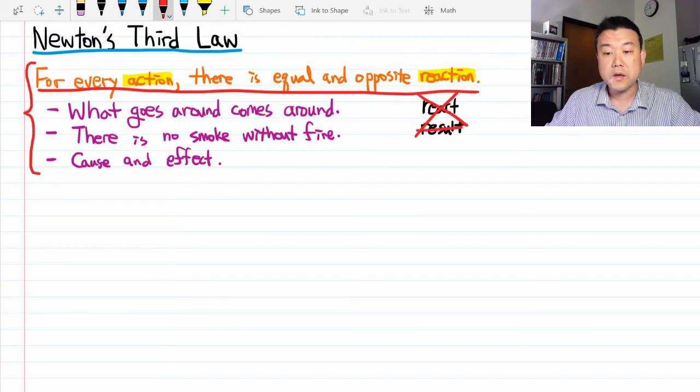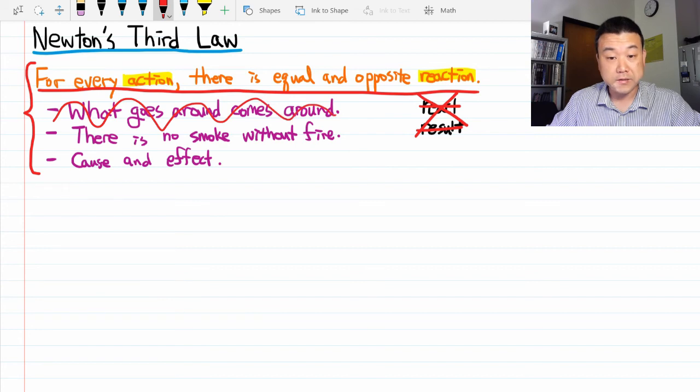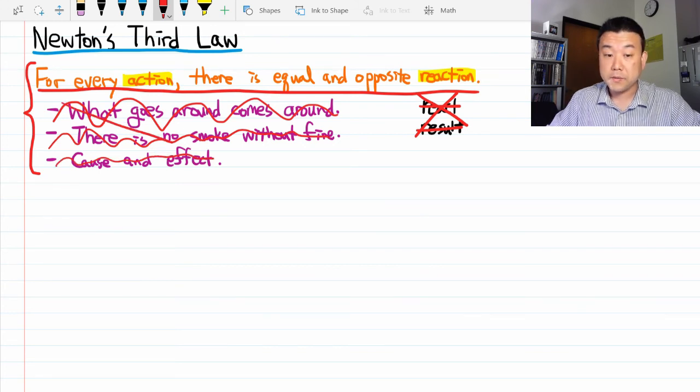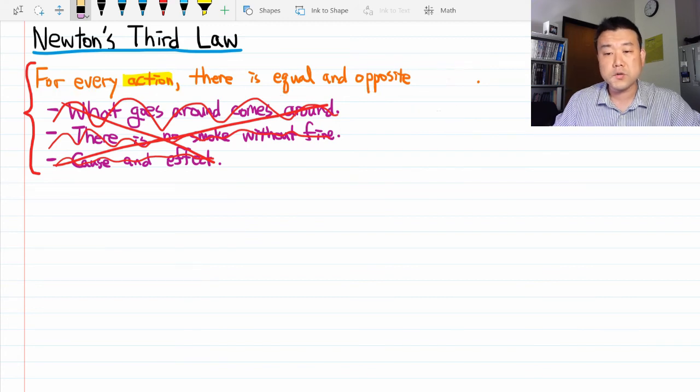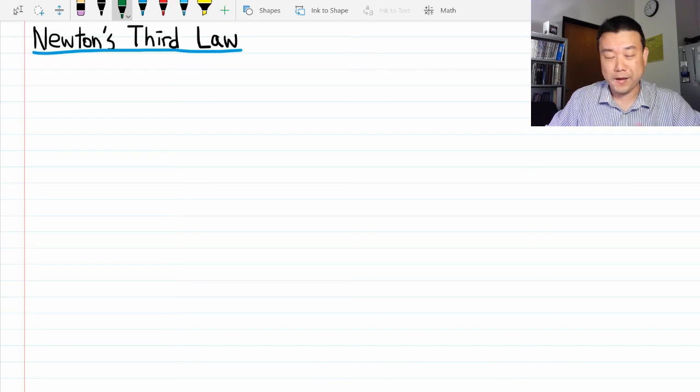None of these are meant when someone says, for every action, there is equal and opposite reaction. So to make it extra clear, all these statements, which may have seemed to you similar to what Newton's third law says. Well, these are principles in life. I'm not saying they are wrong, but they have nothing to do with Newton's third law. That's what I want to point out before we start talking about what Newton's third law does really mean. So what I would really like to do is first let's do away with this phrasing that causes more confusion than help.